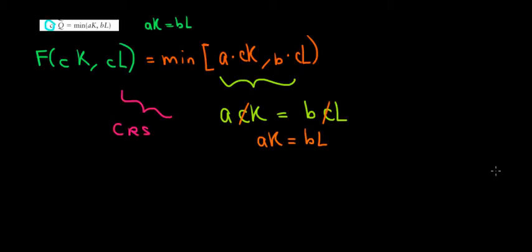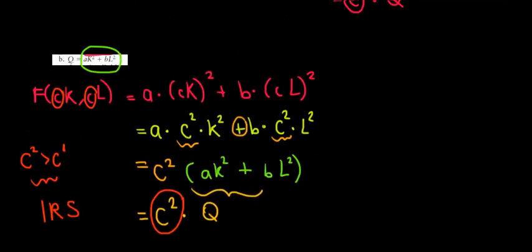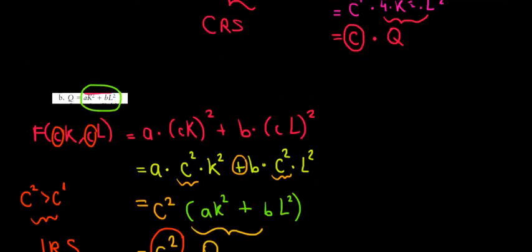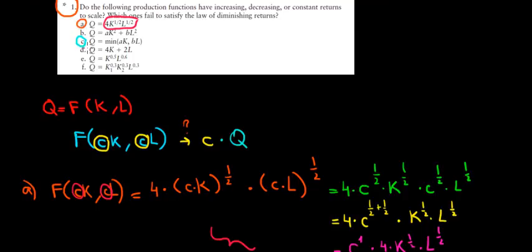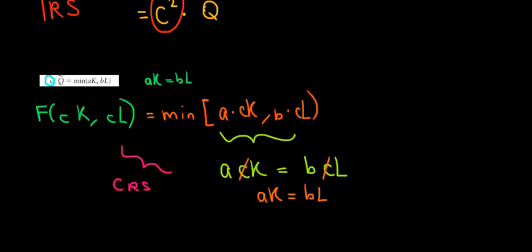Now let's have a look at part D. Here is part D, let's crop it again. This is our function, we're going to see what kind of returns to scale we have over there. Let's solve it here below.